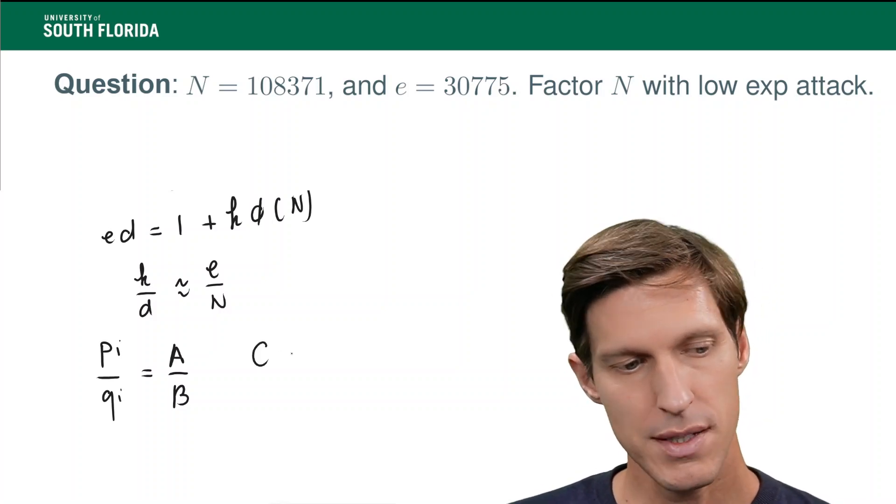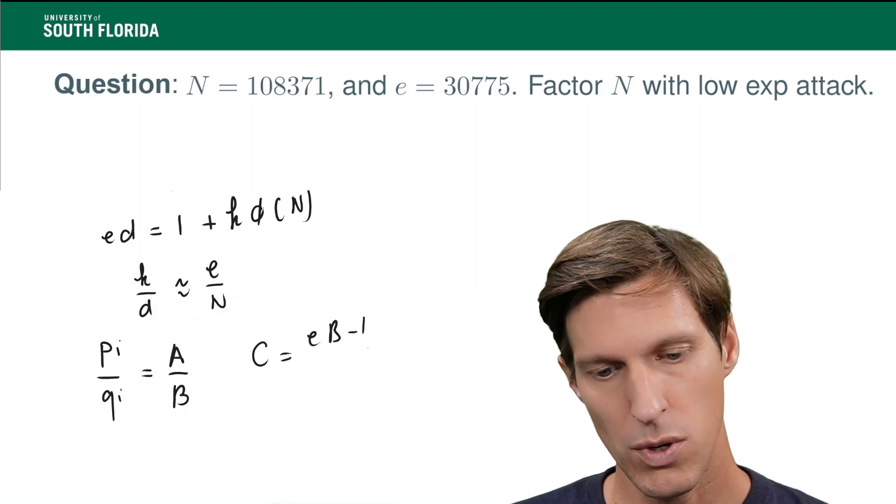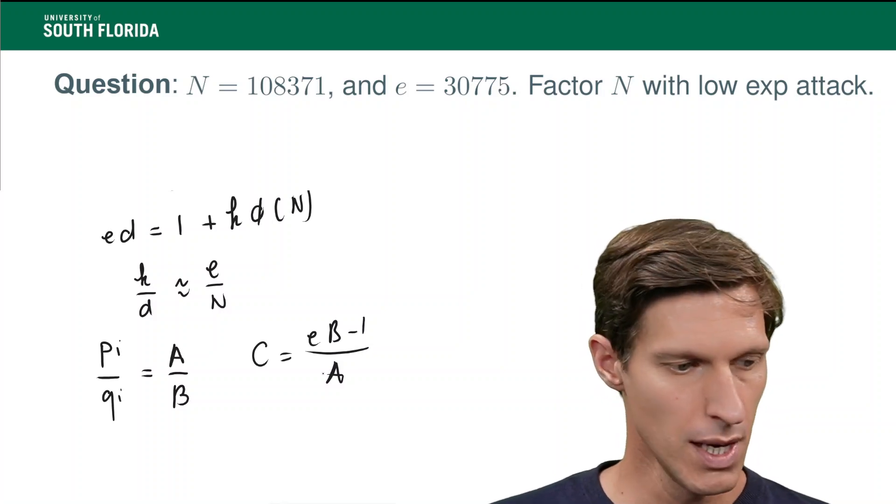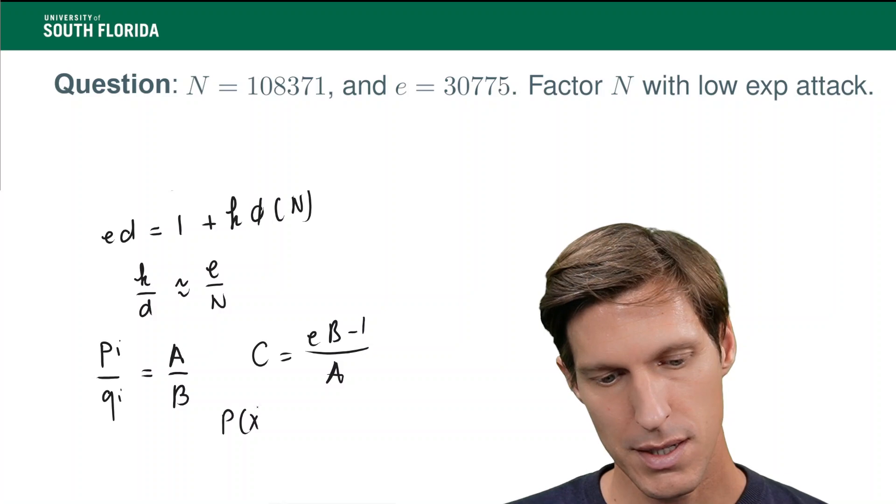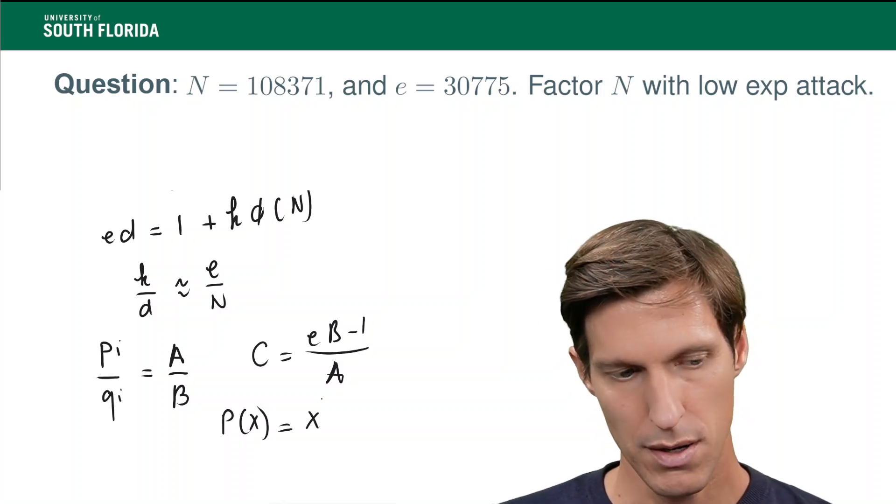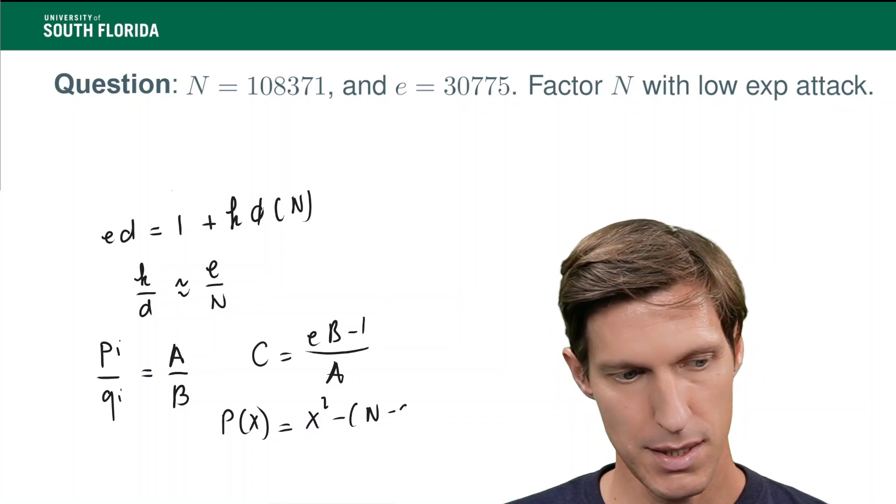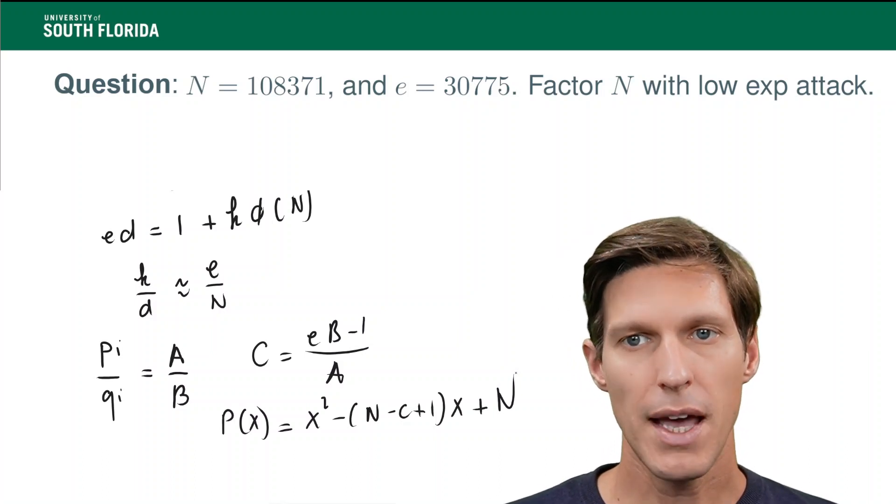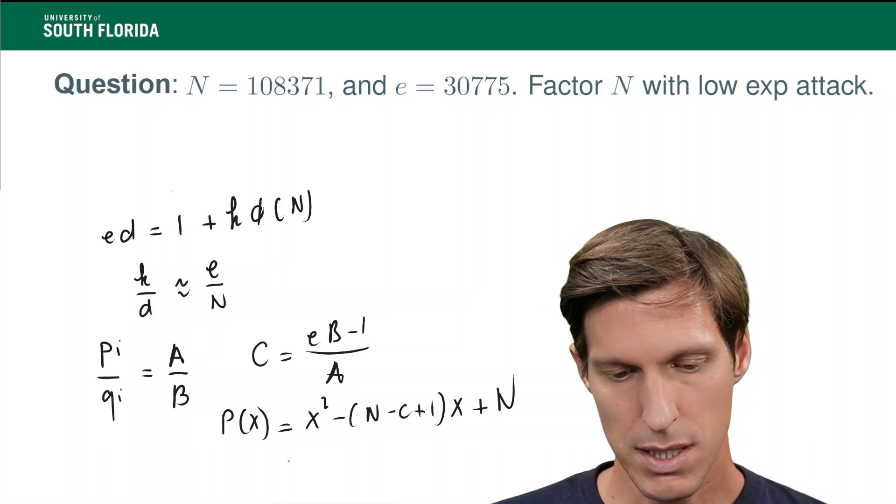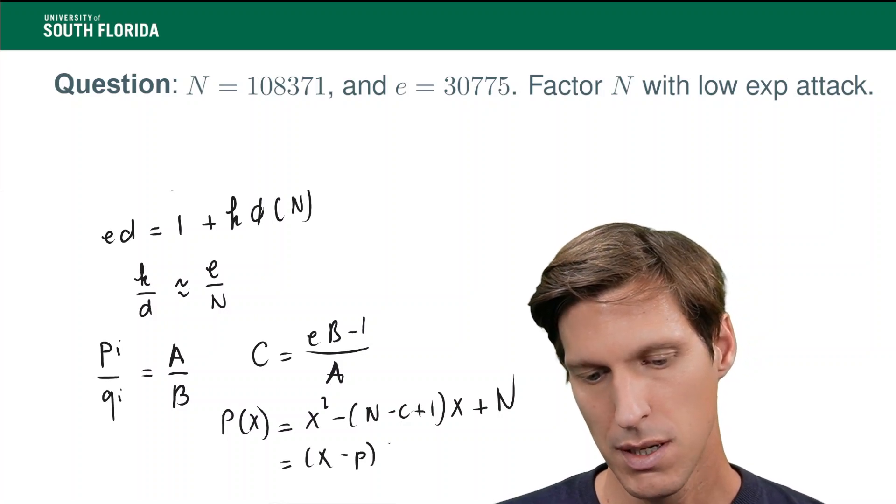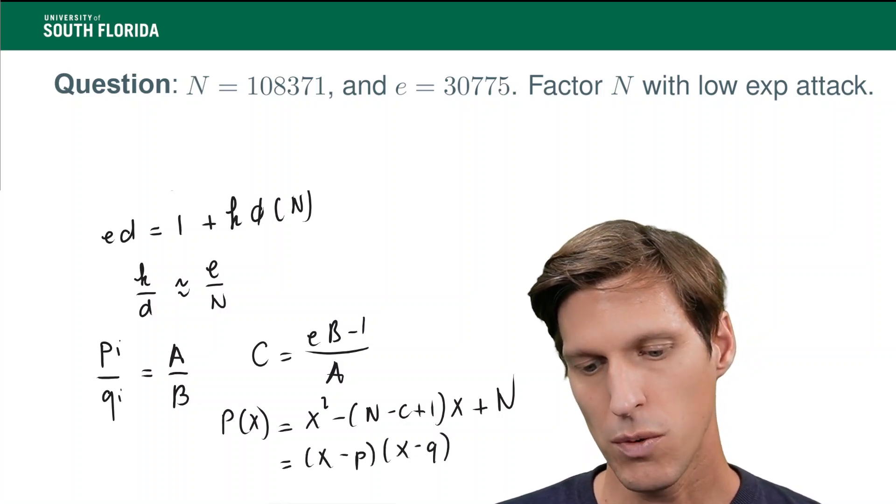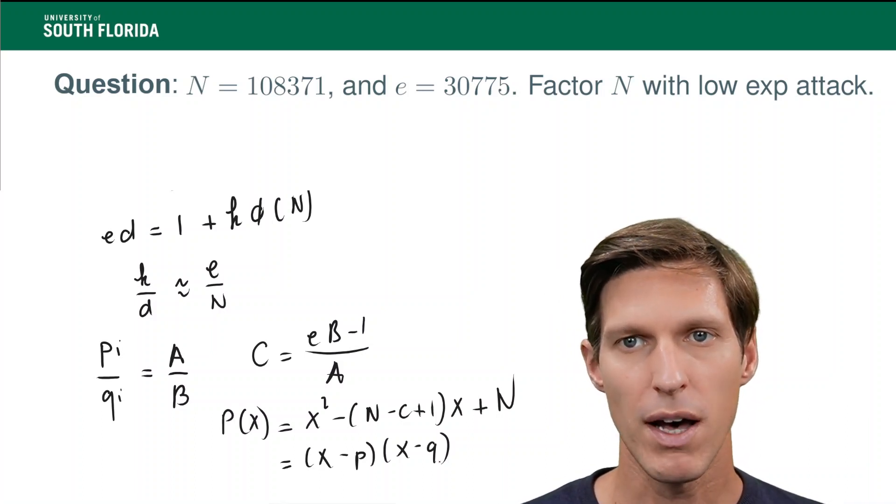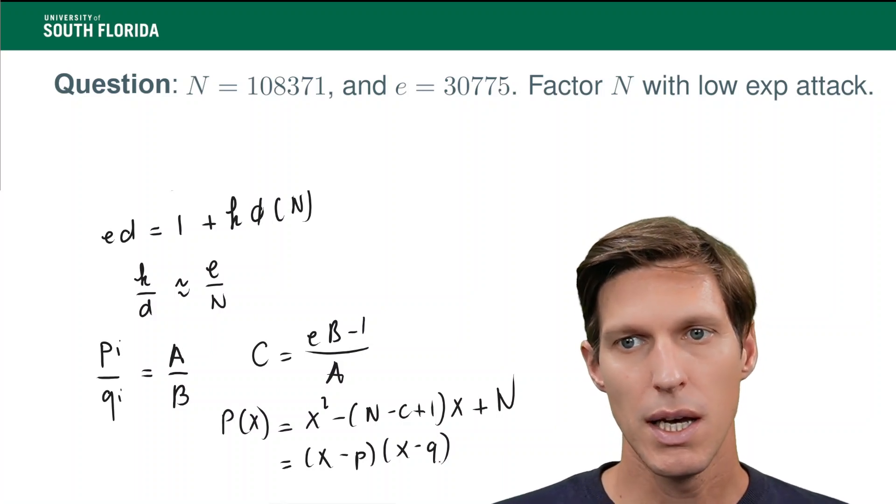Well, first, we need to calculate c, which is eb minus 1 over a, which would be phi of n if we did hit k over d. And we calculate the polynomial p of x, which equals x squared minus (n minus c plus 1)x plus n. And if we have k over d, then this polynomial would be (x minus p) times (x minus q), where p and q are the factors of n. And if we hit that point, then we win. We have factored n, we retrieved d, and all is good.